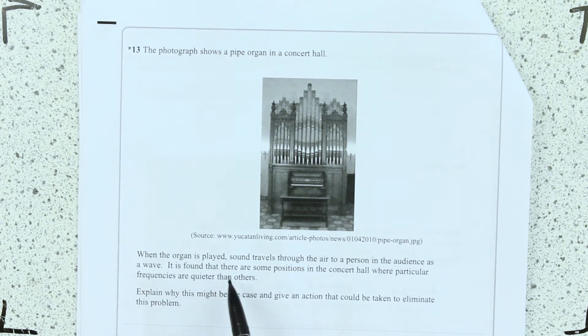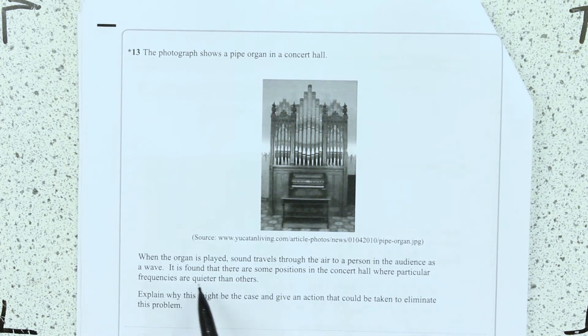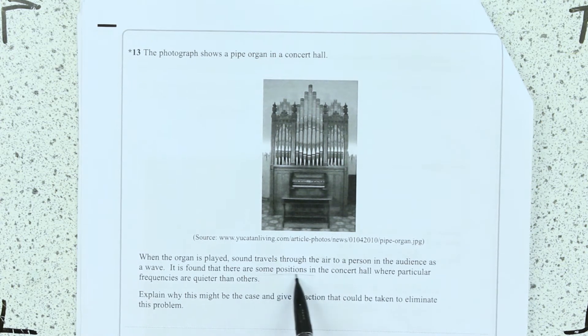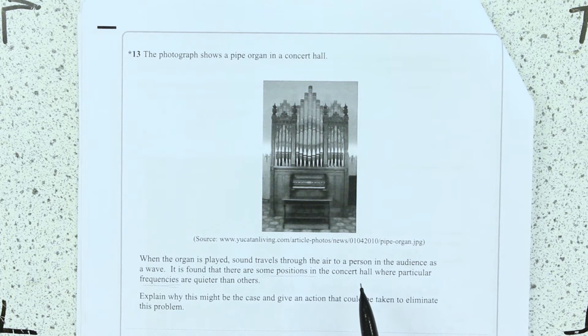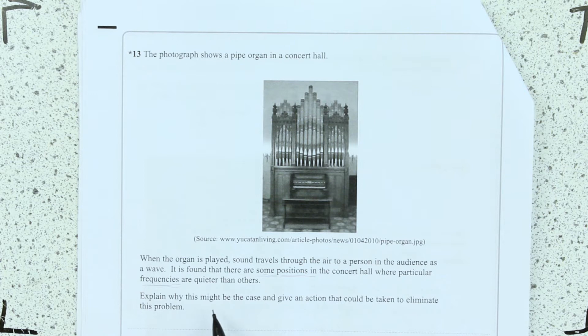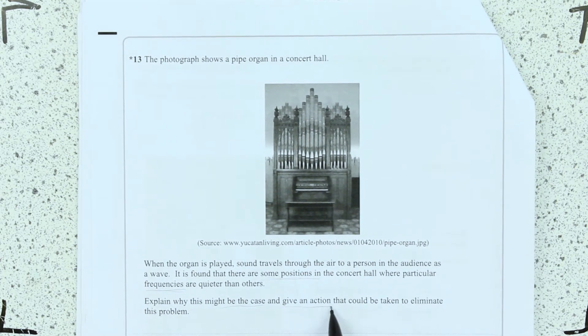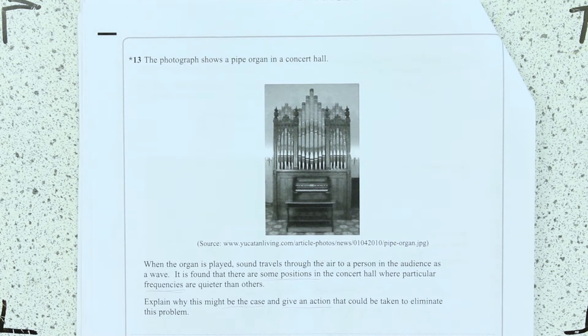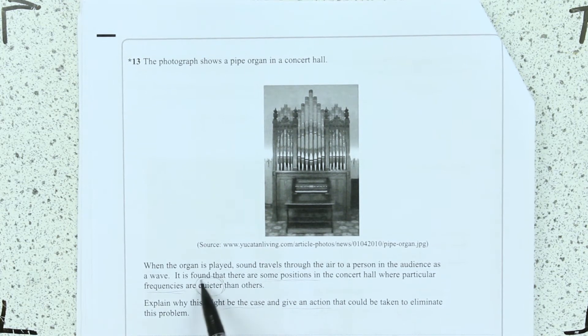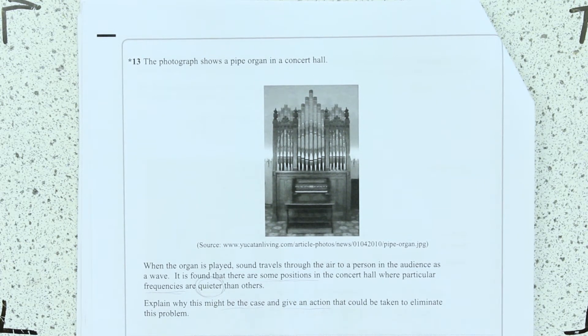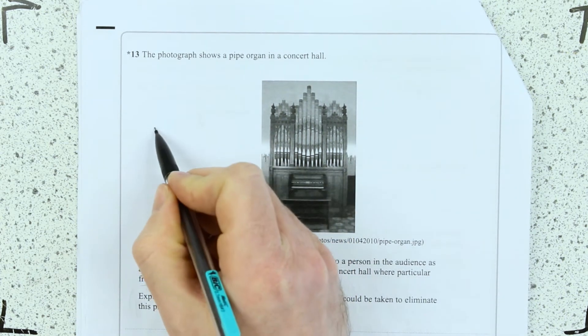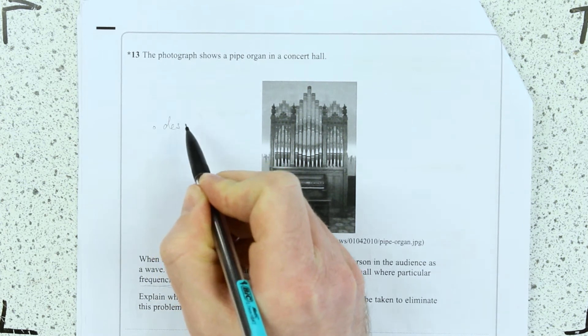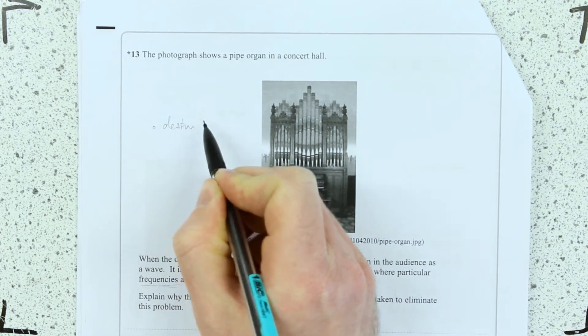So we've got sound travelling through the air, there are positions where particular frequencies are quieter than others. So I'm thinking about that quieter bit there. What's that all about? Well that's about destructive interference.